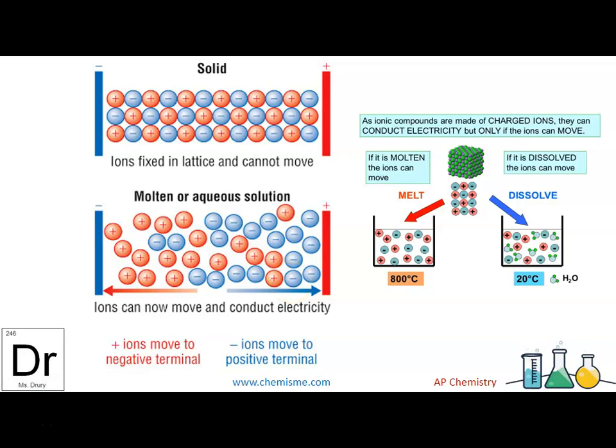Electricity has to flow through the molten or aqueous solution. And now you can see that here too. If you melt it, they just separate so that there's room to flow. Before, there was not any room in the solid phase. If you dissolve it, the water kind of breaks up the positives and negatives. And therefore, again, there's ability to flow.